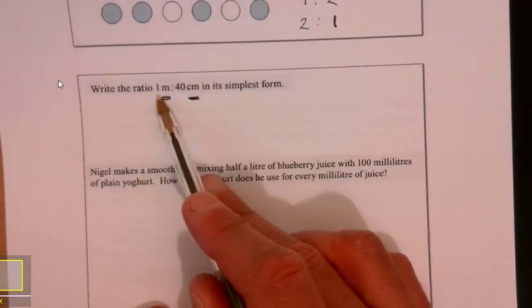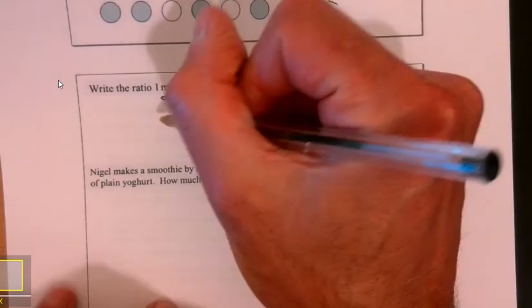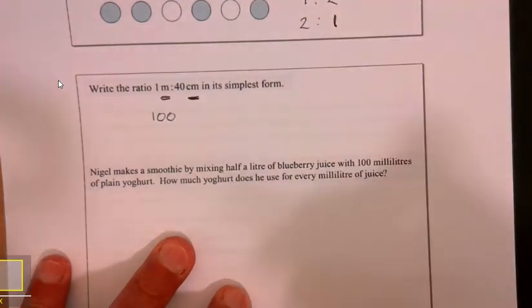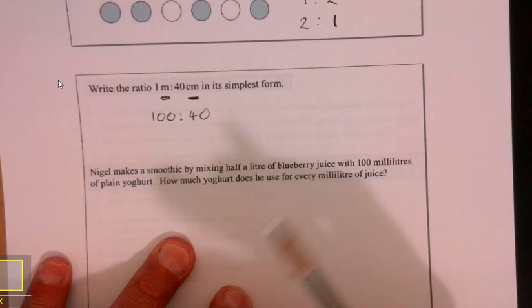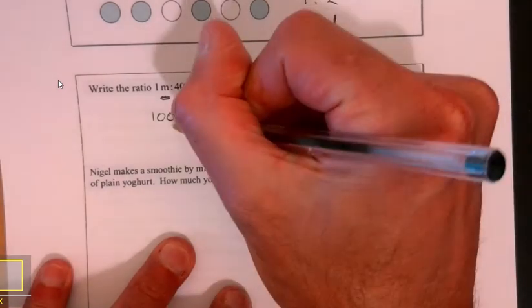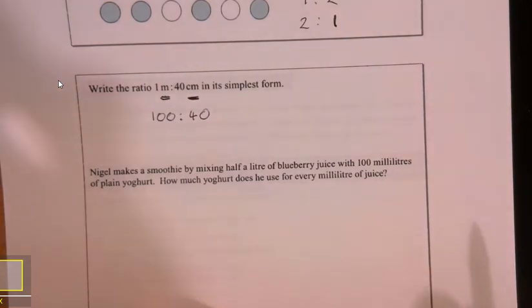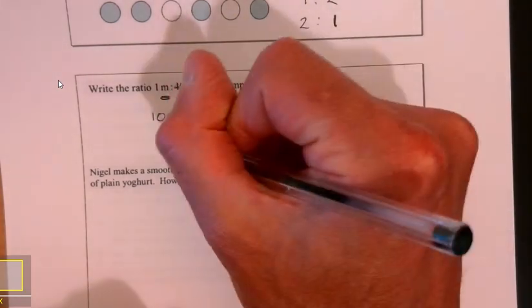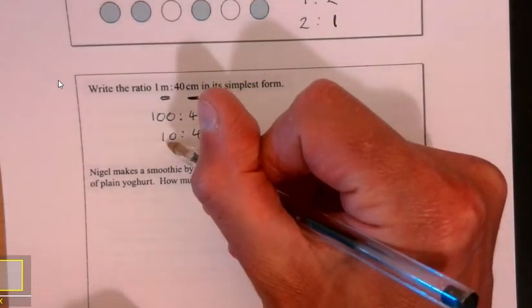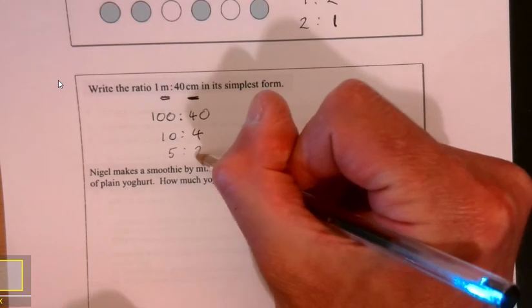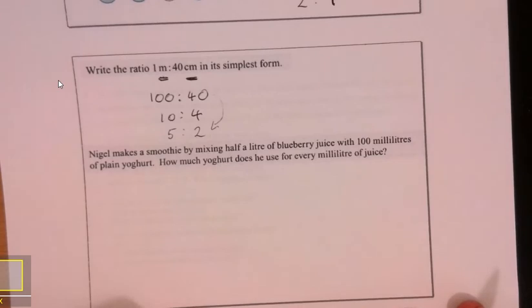You can either change that to meters or you can change that to centimeters. I think changing them to centimeters would probably make it easier. We should know 100 centimeters equals one meter, so I can write that. Now I don't actually need to write the units down because they're the same. This cancels: 10 goes into both, so 10 goes into 100 ten times and into 40 four times, giving us 10 to 4, which simplifies to 5 to 2.